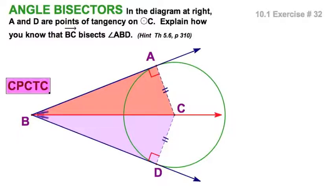And that means, by corresponding parts of congruent triangles, these two angles here are congruent. And if a ray divides an angle into two congruent angles, it is a bisector. Well, that was the first way we learned that.